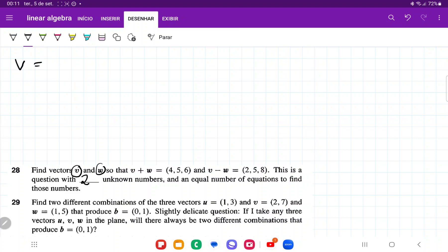We can see that v and w are three-dimensional vectors, so we have the v1, v2, and v3 components, and w has the w1, w2, and w3 components.